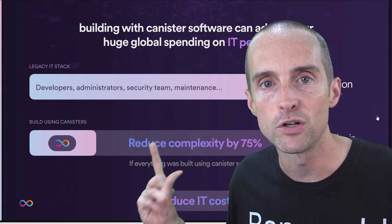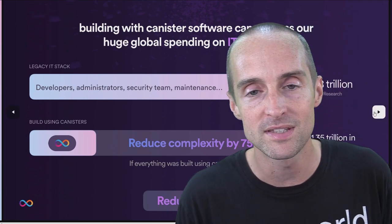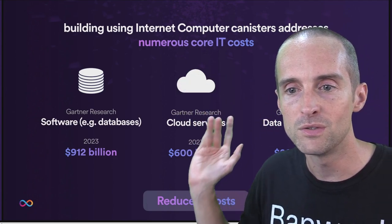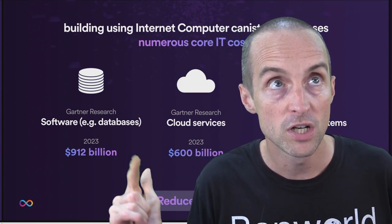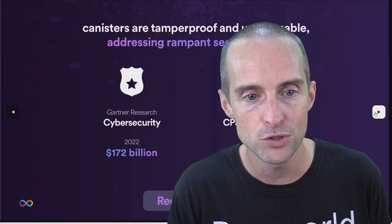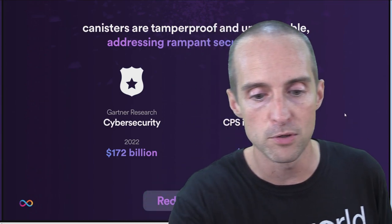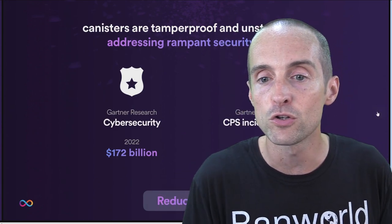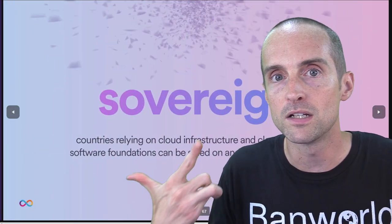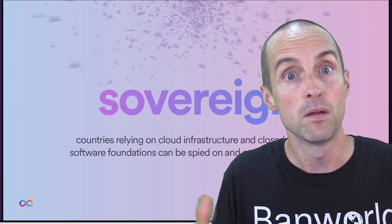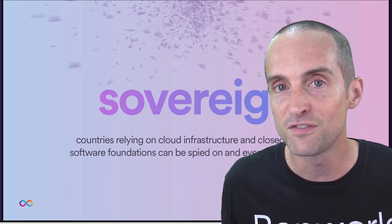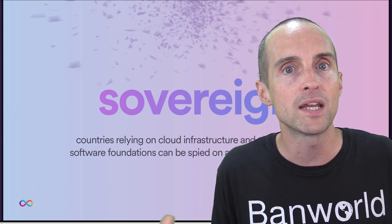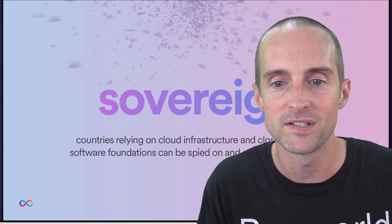Internet Computer can deliver massive advantages to enterprises. There are potentially trillions of dollars in savings because the legacy IT stack requires enormous time and energy from developers, admin, security, and maintenance. Building on Internet Computer is much easier. Billions of dollars lost in cybersecurity incidents and billions spent on cybersecurity every year could be eliminated or drastically reduced on Internet Computer Protocol. The more enterprises build on ICP, the more will continue to come as they see it's better, faster, and cheaper.